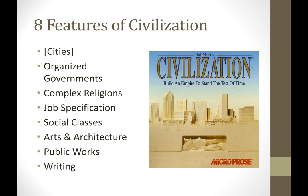So how do we define civilization? It's a complicated question, and there are lots of different ways that people have divided up the qualities of what makes a civilization. Our textbook identifies eight specific features of civilization. In order, these are: cities, organized governments, complex religions, job specification, social classes, arts and architecture, public works, and writing. This is the definition our textbook is using - if you have these eight elements, the human society you're talking about can be called a civilization. We're going to go through these one by one.